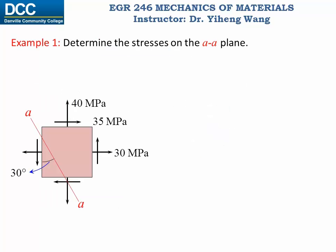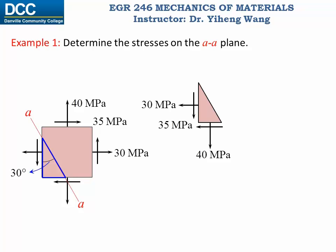Let's look at an example to see how we can find the stresses associated with a plane at a different orientation. We are given the general state of stress for an element and need to find the stresses along the AA plane, which is at a 30-degree angle with the vertical line. We will use a method similar to the method of sections — imagining this element is cut by the AA plane and picking the triangular segment for analysis. On this triangular element, the given stresses act on the known faces, while on the inclined plane we have unknown normal stress sigma x prime and shear stress tau x prime y prime.